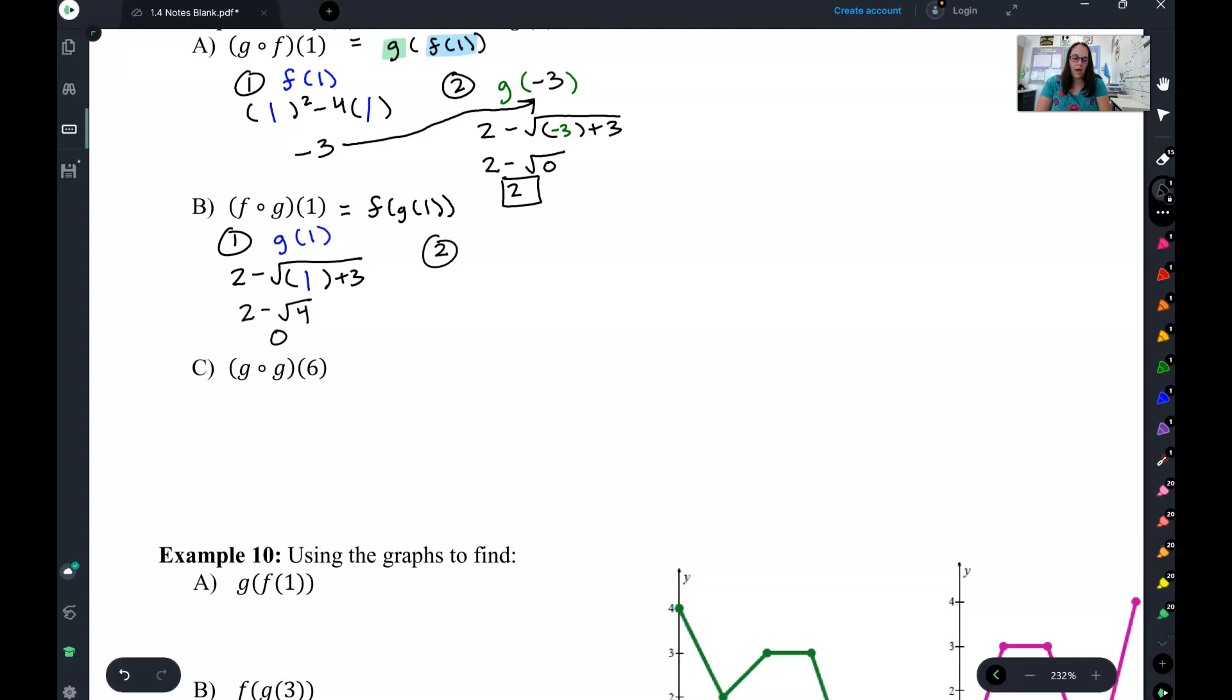And that is what I will plug in to the outer function, which in this case is f. So I take this 0 and plug it in. I want to do f of 0. So now I have my f function, and I'm plugging in 0 for the x's. So 0 squared minus 4 times 0 is just 0.